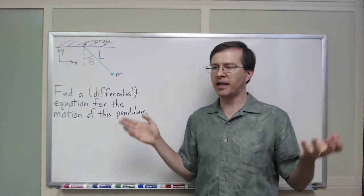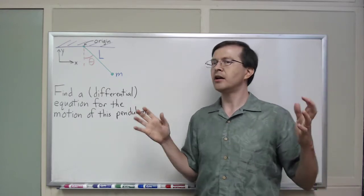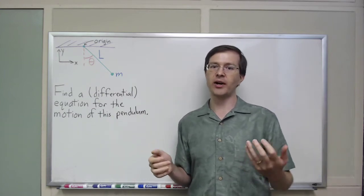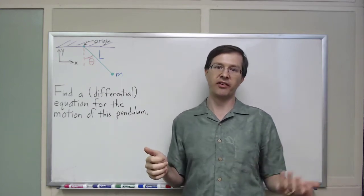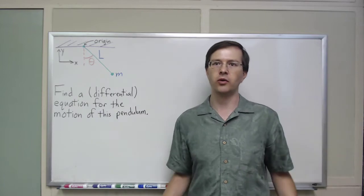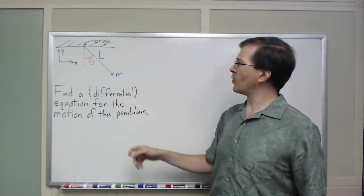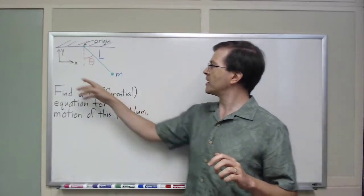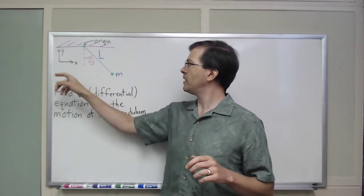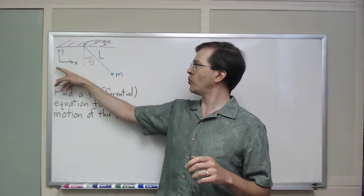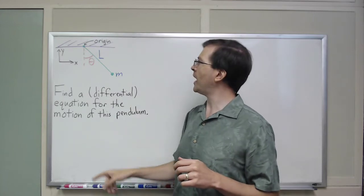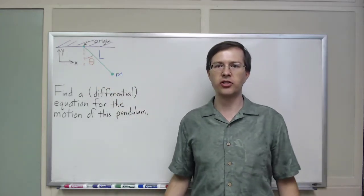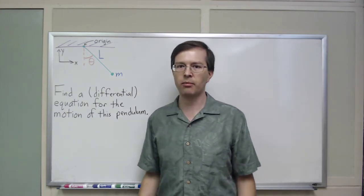This sounds complicated — differential equations and all that — but the whole point is that Newton's second law has acceleration in it, and acceleration is the second derivative of position. I have already defined my coordinates x and y: x is horizontal, y is vertical away from the earth, and I've chosen the origin to be the pivot point. That's a really convenient origin because it makes the equations simple.